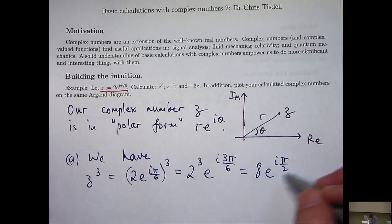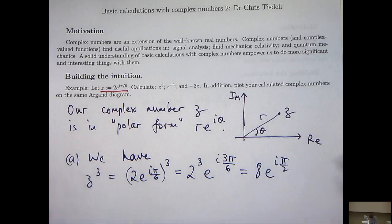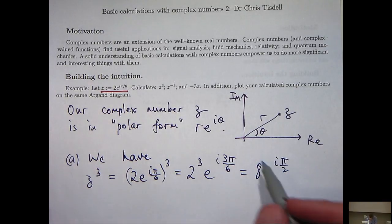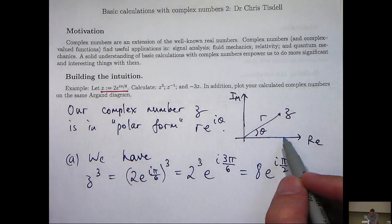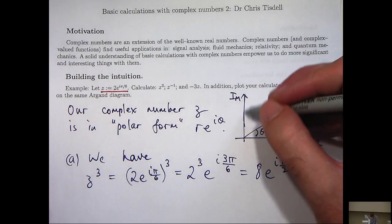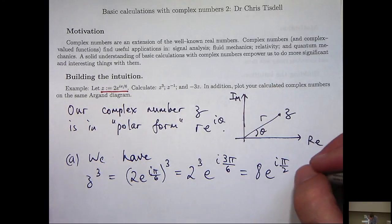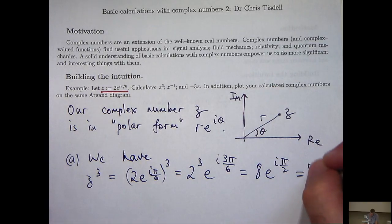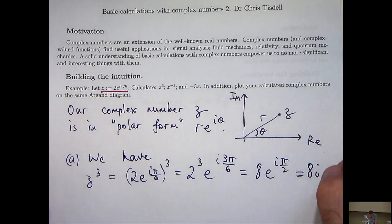And I come up with another polar form. Okay, now it turns out that I can actually simplify that a bit more. Think of going out 8 units from the origin and rotating π/2 units. Then I just lie along the imaginary axis. So I can actually simplify this down to 8i.